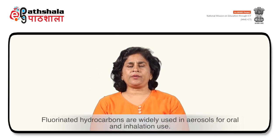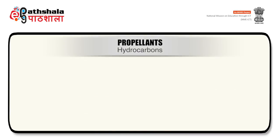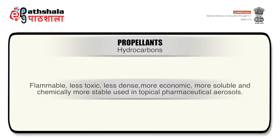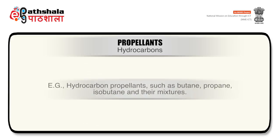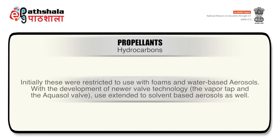Fluorinated hydrocarbons are widely used in aerosols for oral and inhalation use. The next type of propellants are hydrocarbons. These are flammable, less toxic, less dense, more economic, more soluble and chemically more stable, and are used in topical pharmaceutical aerosols. Examples include butane, propane, isobutane and their mixtures. Initially, hydrocarbons were restricted to use with foams and water-based aerosols. With the development of newer valve technology, their use has been extended to solvent-based aerosols as well.